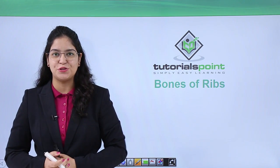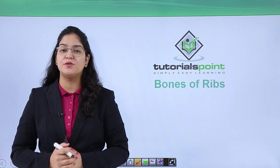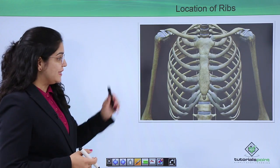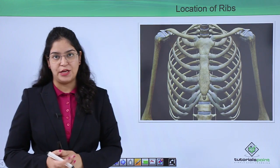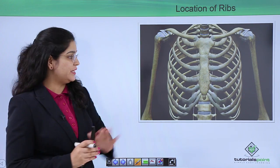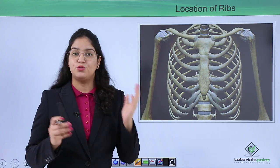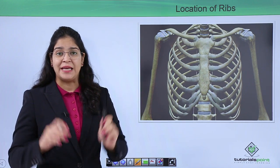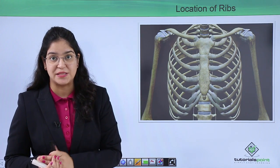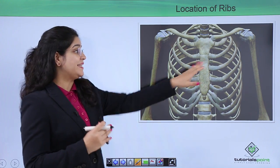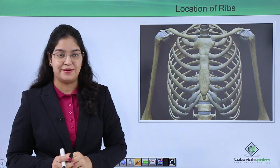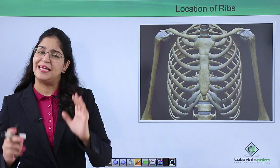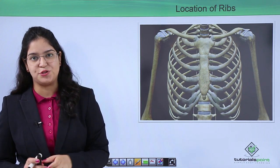Welcome back to Tutorials Point. Today we are going to learn about the ribs and the sternum. We have 24 ribs in our body, 12 on each side, giving us 12 pairs. In previous chapters we talked about how the heart and lungs are well protected by the ribs. In this chapter, let's focus on the ribs specifically.